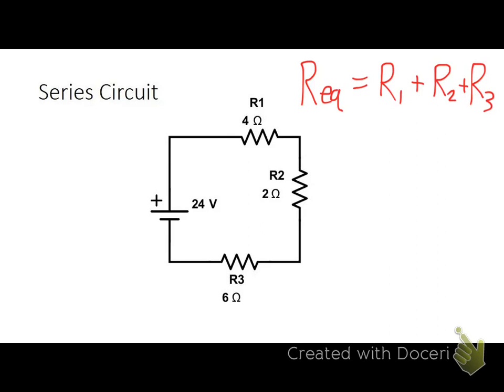All right, well since R1 is 4, R2 is 2, and R3 is 6, I'm pretty good at adding numbers like these. 4 plus 2 plus 6 is 12 ohms. So my equivalent resistance is 12 ohms.